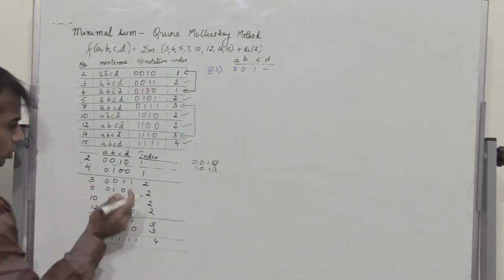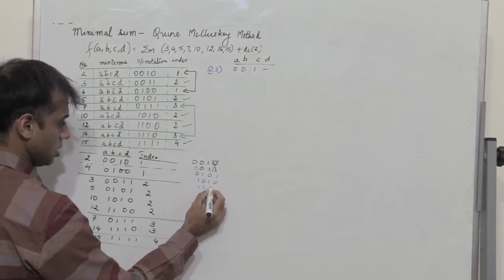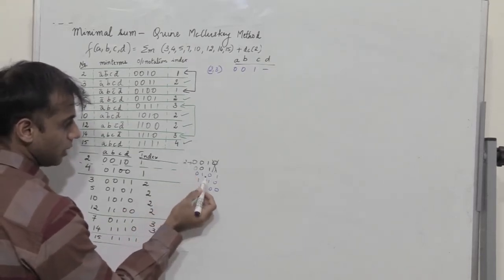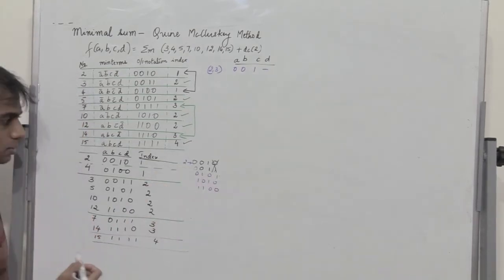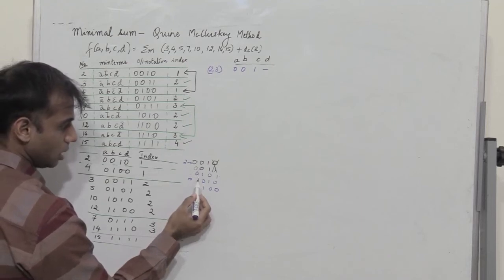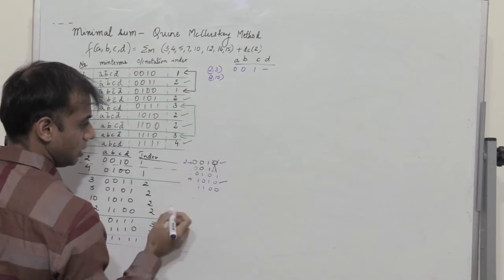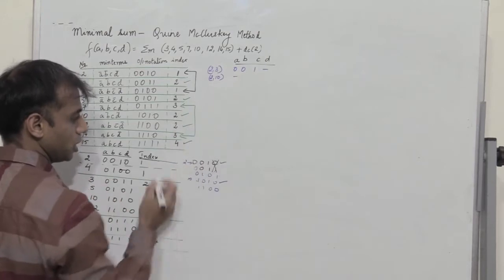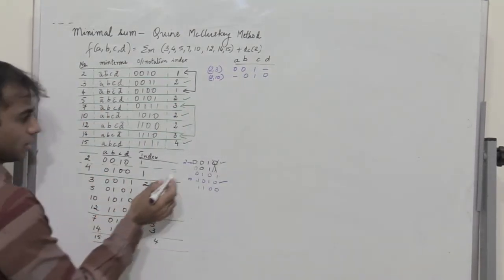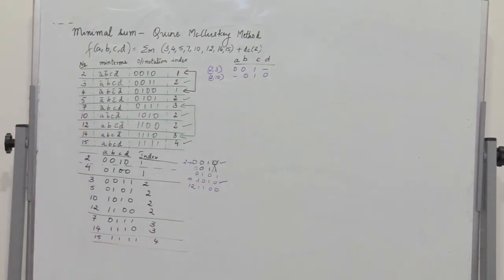Similarly I compare 2 with 5, 10, and 12. When I compare 2 with 5, I find that bits 2 and 4 vary, so I cannot write it. Then I compare 2 with 10: only the first bit varies, so I can write 2,10, giving -010. Then comparing 2 with 12, I find variation in the first and second positions, so I do not consider it. So we have compared 2 with all other combinations having index 2.